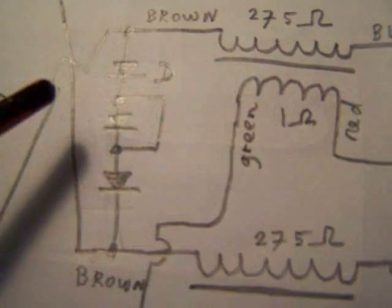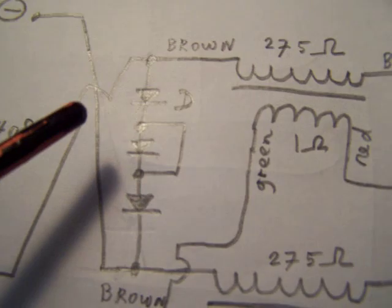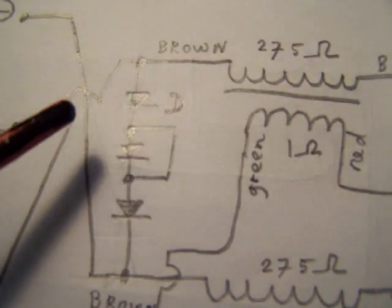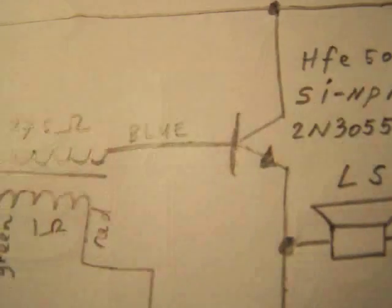These three diodes supply the quiescent current for these two transistors.